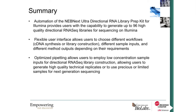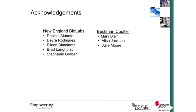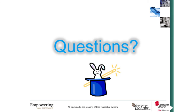In summary, automation of the NEBnext Ultra Directional RNA kit provides the ability to build up to 96 high-quality directional RNA-seq libraries for sequencing on any Illumina platform. We have a highly flexible user interface allowing you to choose between the cDNA synthesis and library construction workflows, vary sample inputs and sample numbers, and get different method outputs depending on your requirements. Our optimized pipetting allows users to employ low-concentration sample inputs for directional RNA-seq, enabling high-quality technical replicates and efficient use of precious or limited samples for next-generation sequencing. I would like to thank our collaborators at New England BioLabs — Daniella Monofo, Adaya Rodriguez, Elaine Deminata, Brad Langhorst, and Stephanie Graber — as well as Mary Blair, Elisa Jackson, and Julie Moore here at Beckman Coulter.